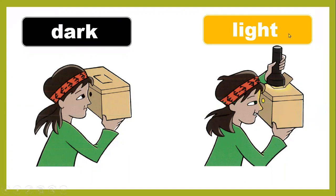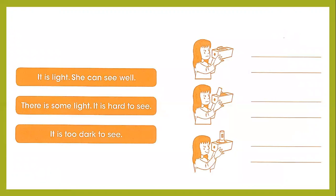Here is your homework. You have to find out what you can see in the box. Look at the three pictures: the first shows darkness — no light, the girl cannot see anything. The second shows some light because the box is open, so she can see. The third shows the girl using a torch, and she can see well. You have to fill in these sentences on the lines.